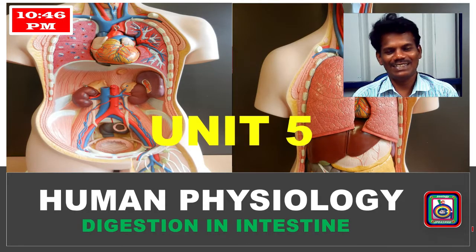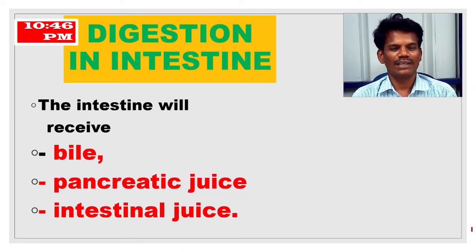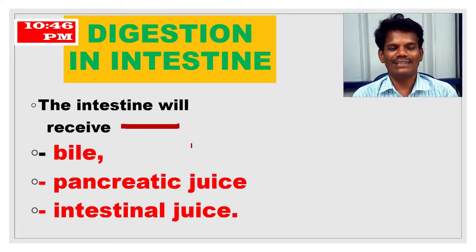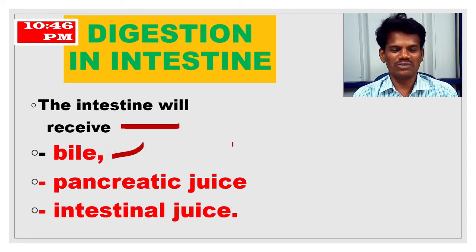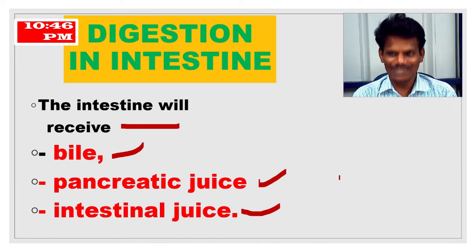Today we are going to see about digestion in the small intestine and how digestion occurs there. The intestine receives juices or digestive enzymes from different organs. The first is bile juice, secreted by the liver. The second is pancreatic juice, secreted by the pancreas. The third is intestinal juice, secreted by the intestine itself.